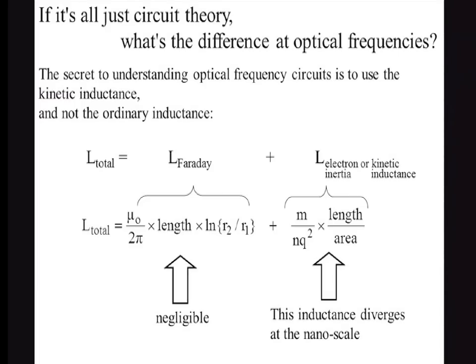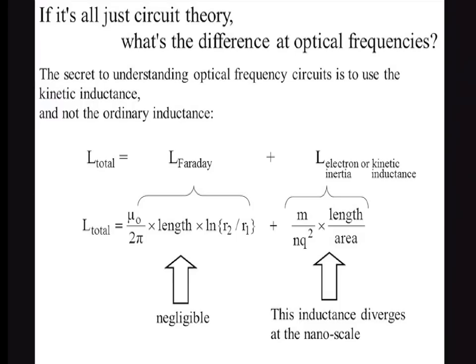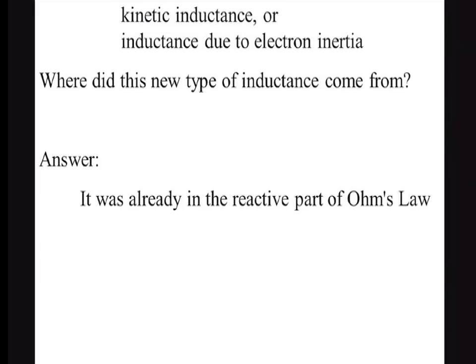Now, if it's all about circuits, what's different at optical frequencies? There is something different: you have the normal inductance of a wire, but in addition you also have some added inductance. This added inductance comes from the inertia of the electrons. If you apply an electric field on a metal, the current does not begin immediately because first the electrons have to accelerate. This is just like an inductor, because in an inductor also you apply a voltage and the current does not begin immediately. This type of inductance is called kinetic inductance. It depends upon the inertia of the mass of the electron, and it's similar to resistance — it scales with length over area. It was well known, for example, to people who study superconductors. When there's no resistance, the inductance becomes very important. And that's what's different at optical frequencies.